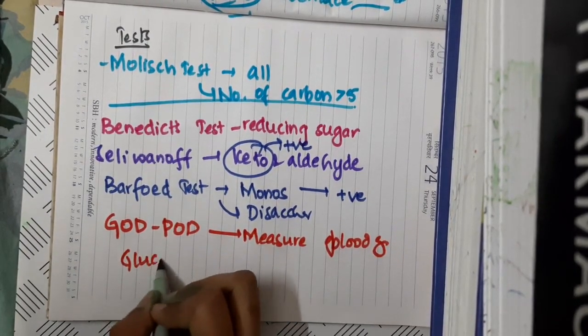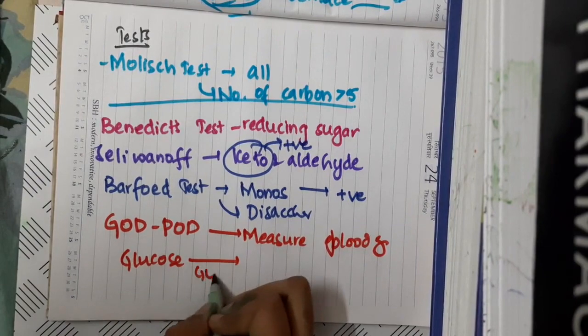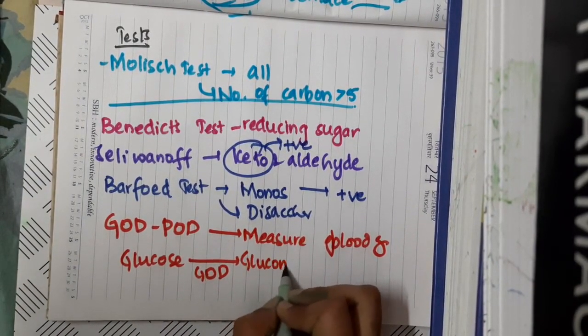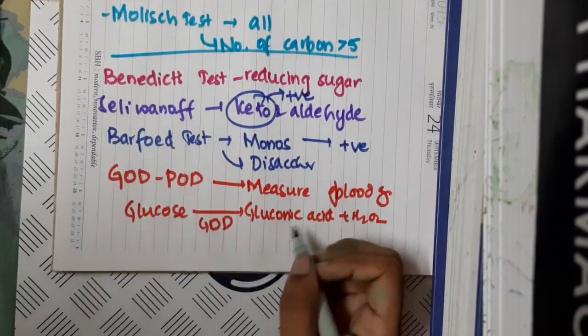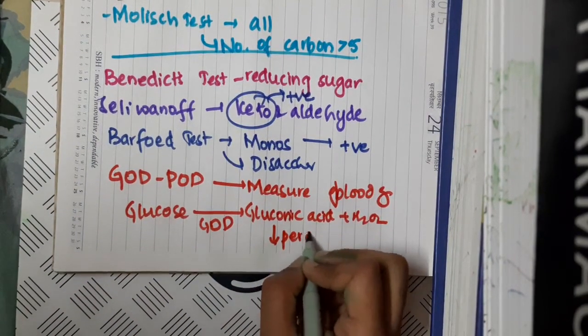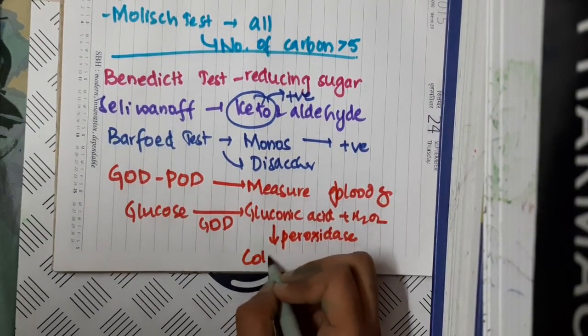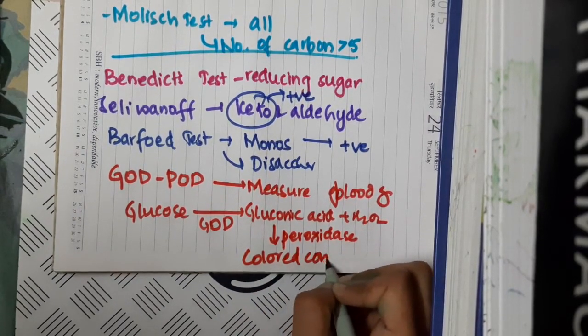If there is glucose, this glucose in the presence of glucose oxidase forms gluconic acid and H2O2. This gluconic acid in the presence of peroxidase forms a colored compound.